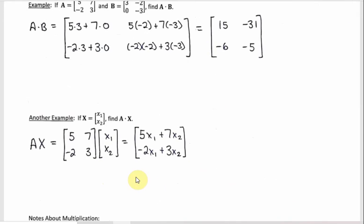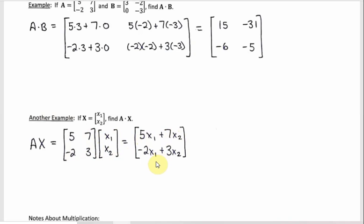The other example — and this is something we'll have to do a lot — is multiplying a matrix by a vector. Here x is just a column vector with x1 and x2. When we multiply matrix A by that, the result also ends up being a vector. Since A has two rows and x has one column, the product is a 2×1 column vector. The top entry is 5 times x1 plus 7 times x2, and the bottom entry is negative 2 times x1 plus 3 times x2.